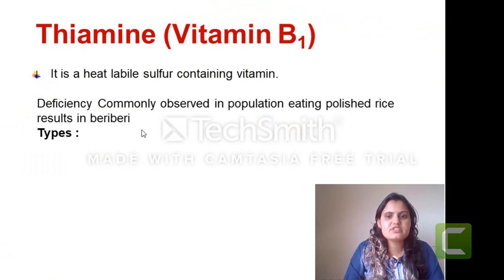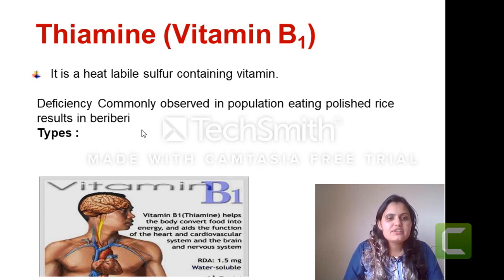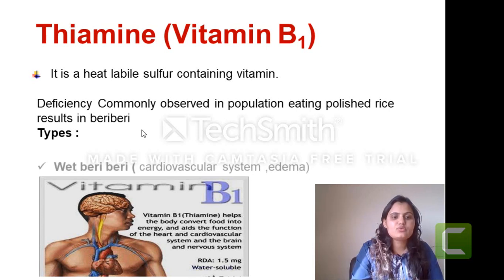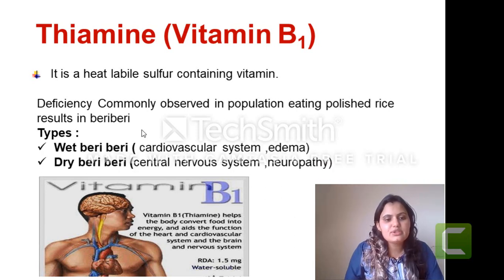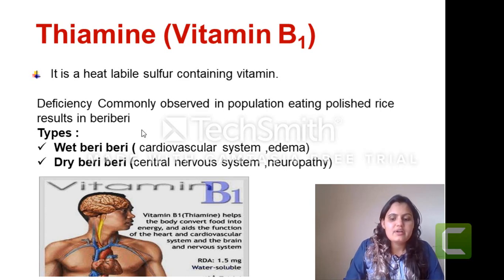Vitamin B1 is mainly a heat-labile, sulfur-containing vitamin. It helps our body convert food into energy and aids in the function of the heart, nervous system, and immune system. If there is deficiency, it is commonly observed in populations eating polished rice and results in a disease known as beriberi. It can be of two types: wet beriberi and dry beriberi. In wet beriberi, there will be involvement of mainly the cardiovascular system with edema in different body parts. In dry beriberi, there will be involvement of mainly the central nervous system, leading to neuropathy.